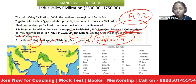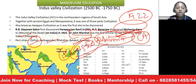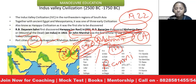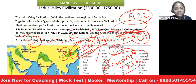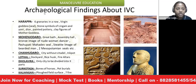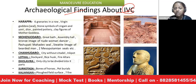Very important from a current affairs perspective — note it down: Dholavira was recently declared a UNESCO World Heritage Site. It is the very first site from the Indus Valley Civilization to be declared a UNESCO World Heritage Site. Along with Dholavira, the Ramappa Temple from Telangana was also declared a UNESCO World Heritage Site. Being selected as a World Heritage Site holds great importance for that particular site.